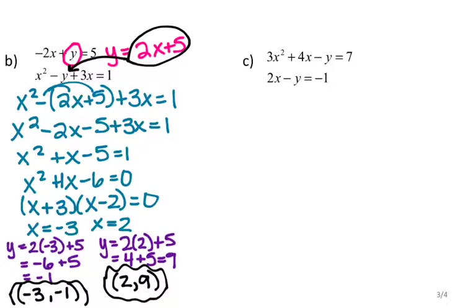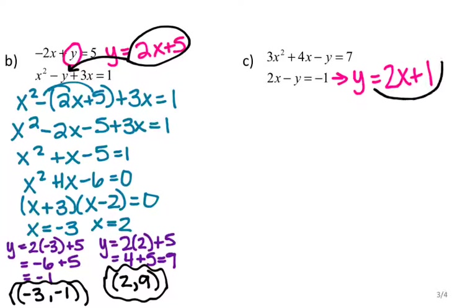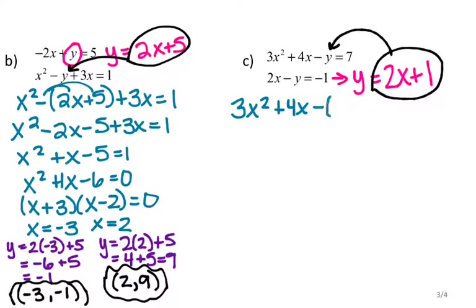For letter C, I again want to solve for the variable that is not being squared. Since x is being squared, I'll solve for y in the other equation. Getting y by itself — subtracting 2x and dividing by negative 1 — gives y equals 2x plus 1. I'll substitute 2x plus 1 in for y in my other equation, giving 3x squared plus 4x minus 2x plus 1 equals 7.